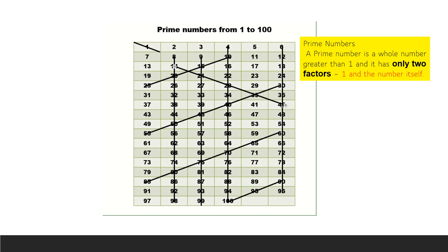Continuing multiples of 7 — after 42, the next are 49, 56, 63, 70, 77, and 84.